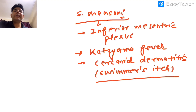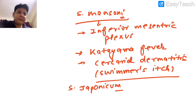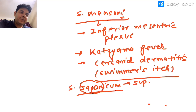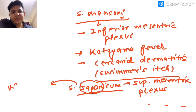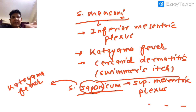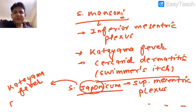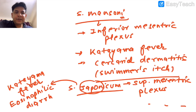Schistosoma japonicum — since Japan is a superior country, this fellow resides in the superior mesenteric plexus. Japonicum also leads to Katayama fever. Its egg has a rudimentary spine (lateral knob). A unique feature of japonicum is that it leads to eosinophilic diarrhea.